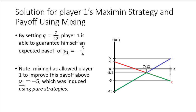player one is able to guarantee himself that expected payoff of negative 5 over 4, regardless if player two tries to punish him with either L or R. So just note here that mixing has actually allowed player one to improve his maximin payoff above the negative 5 value, which we had found in the previous video segment when he was only using pure strategies to defend himself.